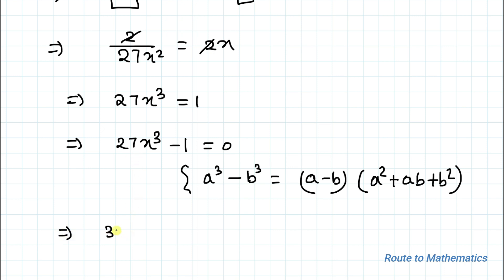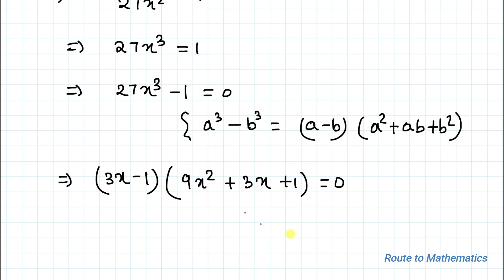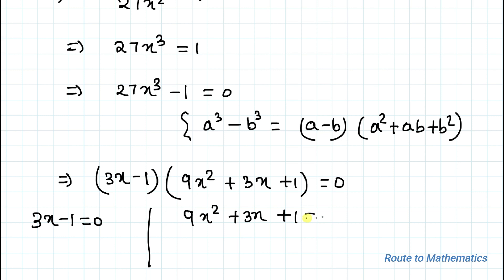We can write 27x³ minus 1 as (3x minus 1) multiplied with (9x² plus 3x plus 1) equals 0. So from here we can write 3x minus 1 equals 0, and 9x² plus 3x plus 1 equals 0.